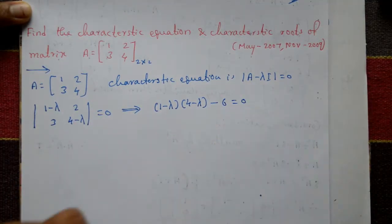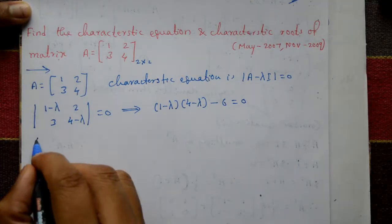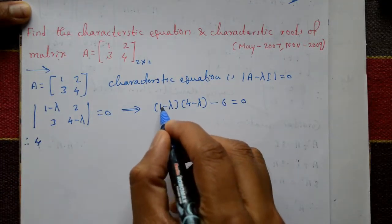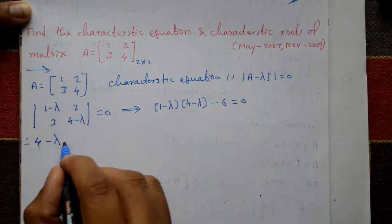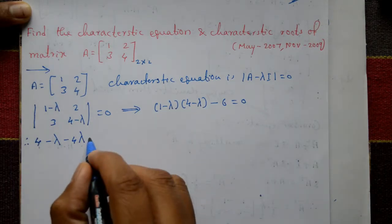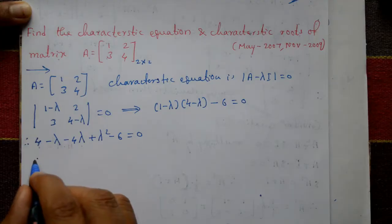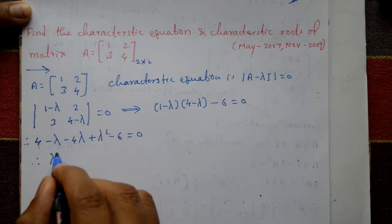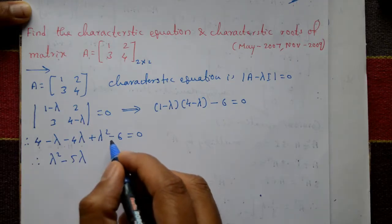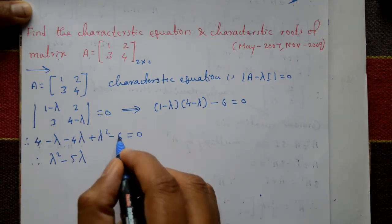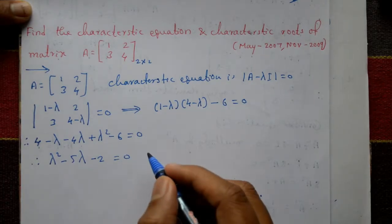Expand this determinant: (1 minus lambda) into (4 minus lambda) minus 3 into 2, which is 6, equal to 0. Opening the bracket: 1 into 4 is 4, 1 into minus lambda is minus lambda, minus lambda into 4 is minus 4 lambda, minus lambda into minus lambda is plus lambda squared, minus 6 equal to 0. Therefore, lambda squared minus 5 lambda minus 2 equals 0.